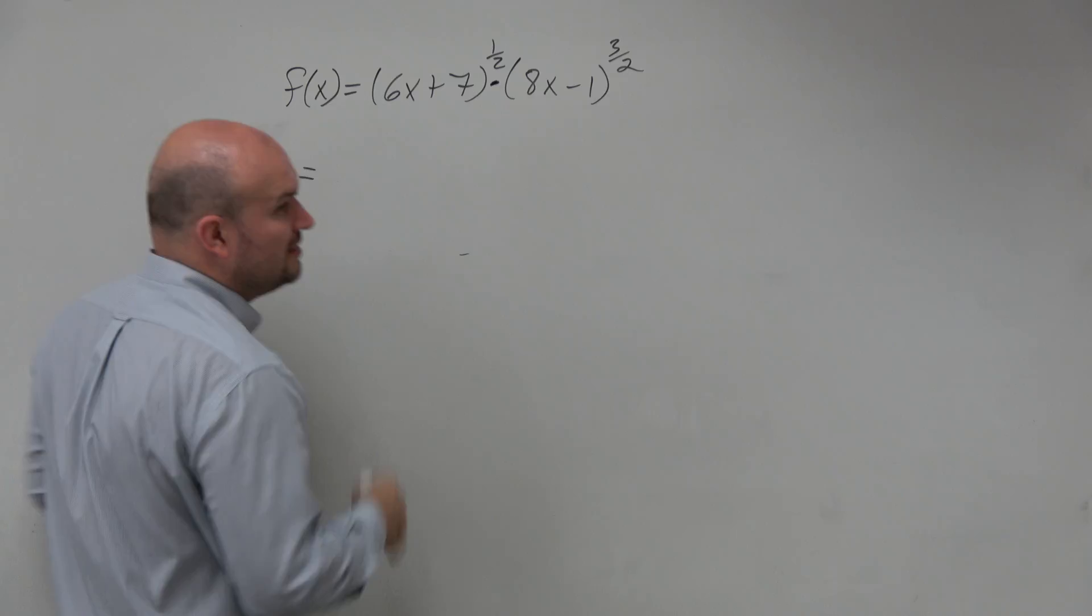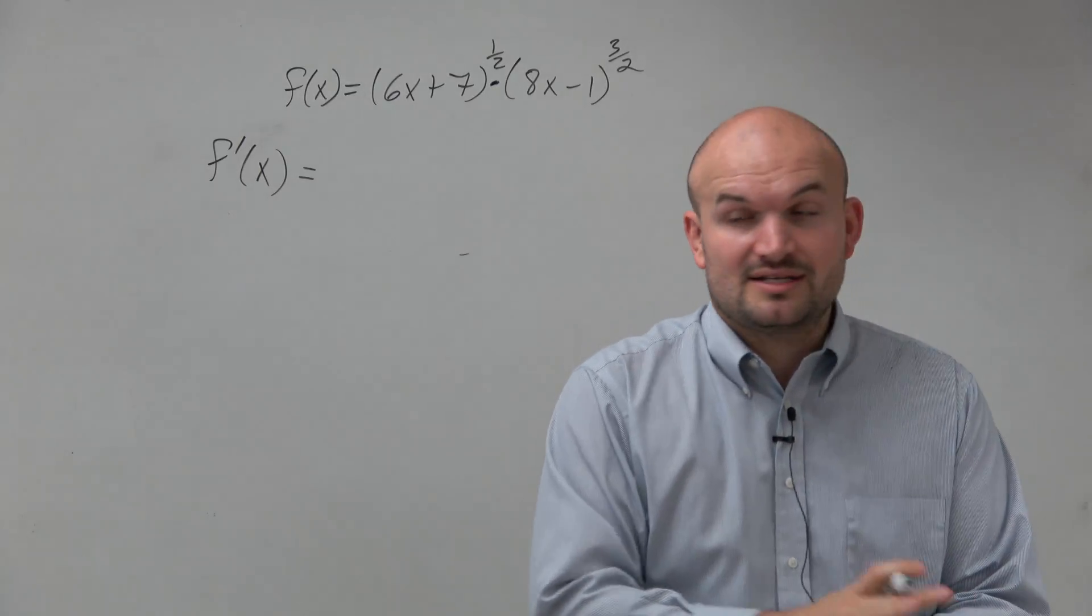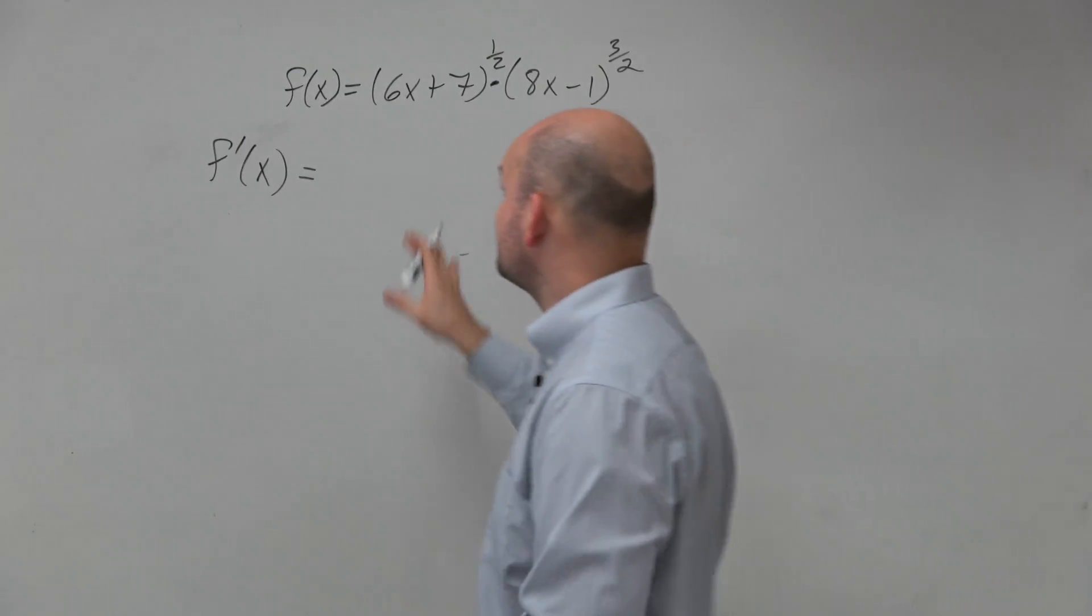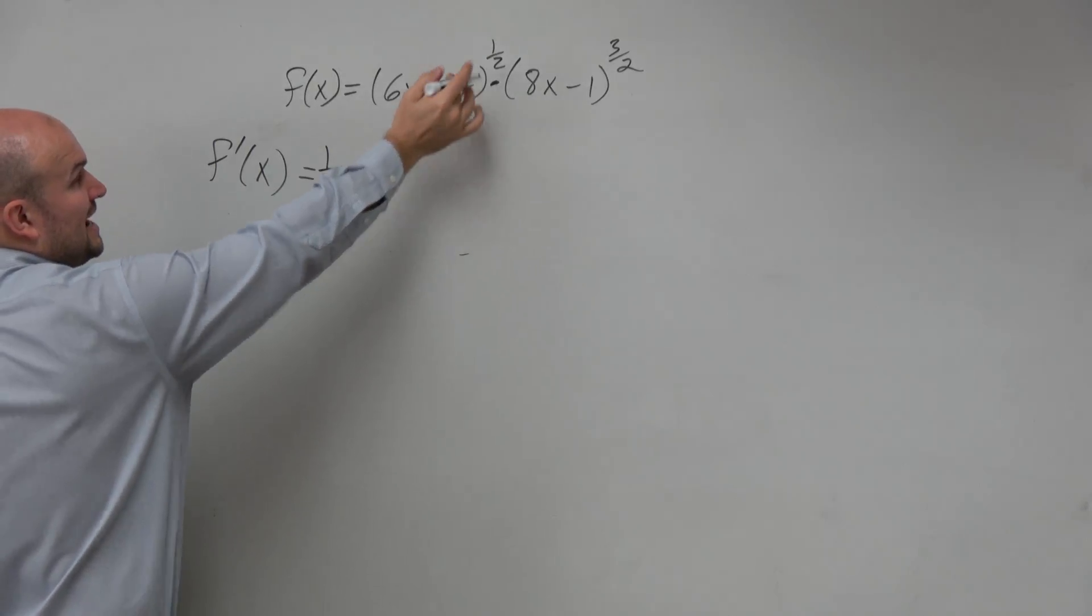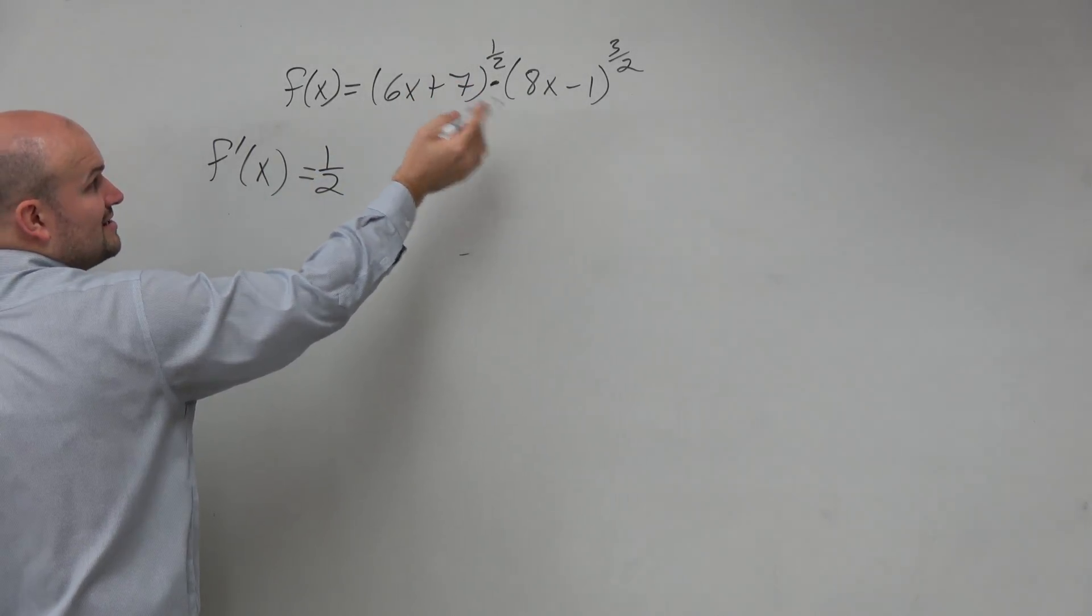So again, here we notice we have the product rule, just like the one we last did. It's the product and then the chain rule inside of it. So I'll take the derivative of the first one. You can see my parent function would be x to the 1/2, which is the same thing as square root of x.